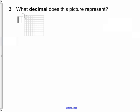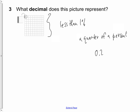Question three says, what decimal does this picture represent? Well, since there are no full squares here, it is less than 1%. We know that for sure, because there's not even a square. And the one that is shaded in is only a quarter. So it's really a quarter of a percent.